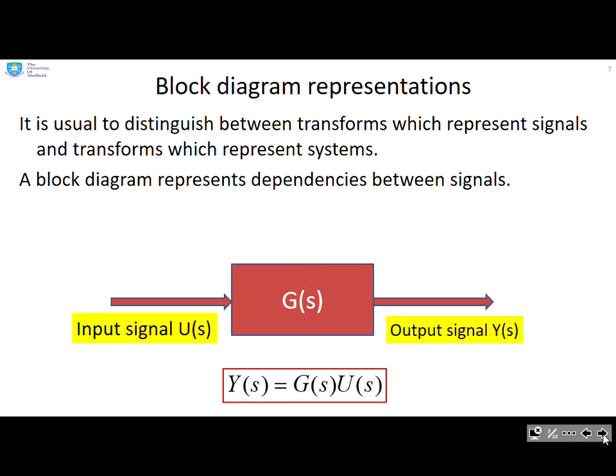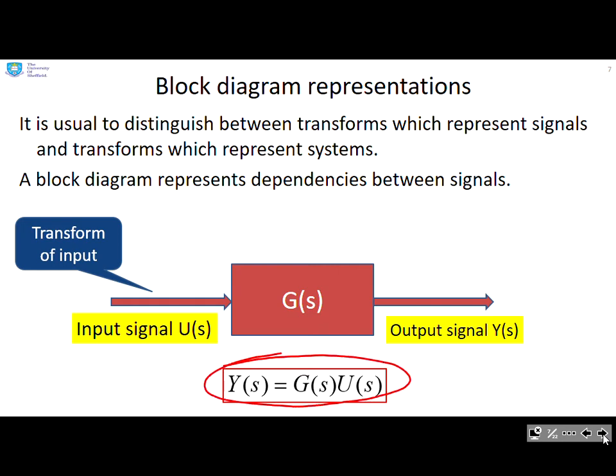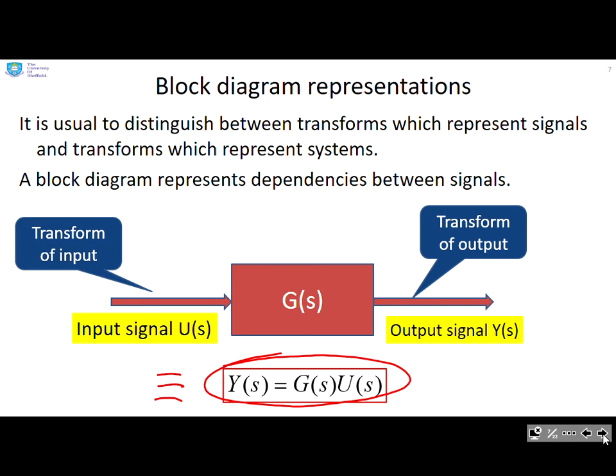Block diagram representations. What we tend to do is represent these relationships using block diagrams. So whenever you see a block diagram like this, you immediately think that is equivalent to this mathematical expression at the bottom, y equals gu. The arrow going in is the transform of the input, the arrow coming out is the transform of the output, and the box in the middle is the transfer function. So we have boxes for systems and lines or arrows for signals, and this is simply a convenient representation.